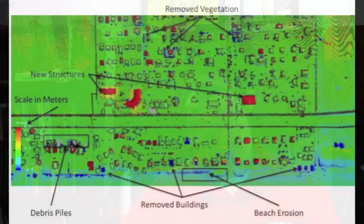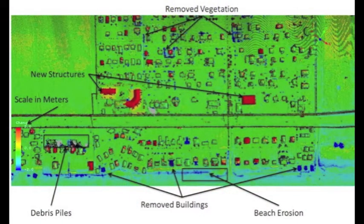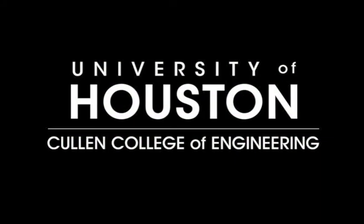LIDAR stands for light detection and ranging, which is really very similar to radar, only instead of using radio waves, you're using light waves. A LIDAR system sends out a short pulse of light and measures the amount of time it takes for it to travel from the source to the surface and back. You multiply that by the speed of light and divide by two and you have a range. When we use these ranges — several hundred thousand of these ranges a second — you build that up to provide yourself a 3D model of whatever the aircraft is flying over.